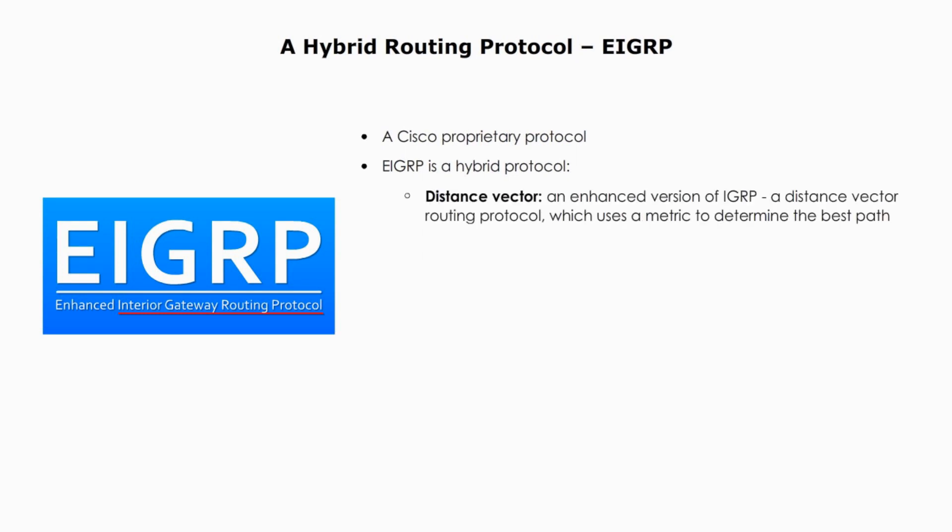It's a distance vector routing protocol because EIGRP is an advanced distance vector routing protocol based on the principles of the Interior Gateway Routing Protocol, IGRP, which means that it uses a metric to determine the best path to a destination and sends its routing updates to its neighbors.